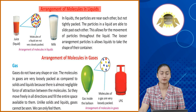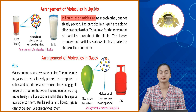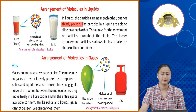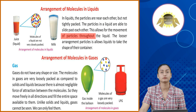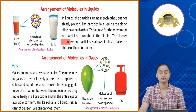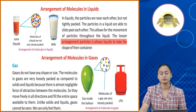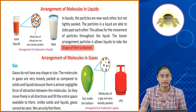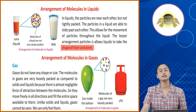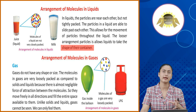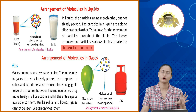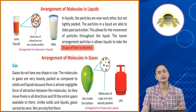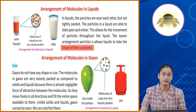Arrangement of molecules in liquids. In liquids, the particles are near each other but not tightly packed. The particles in a liquid are able to slide past each other, which allows for the movement of particles throughout the liquid. The looser arrangement of particles allows liquids to take the shape of their container. Jo liquid hota hai, iske molecules bohat loosely packed hote hai aur ye ek dusre ke aas paas se nikal sakte hai. Yehi reason hai ye bohat asaani se flow karte hai aur jis bhi container mein dalo, usi ki shape le lete hai.